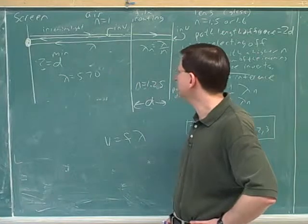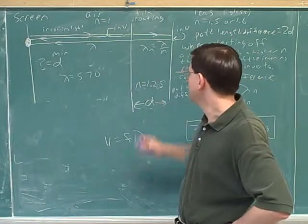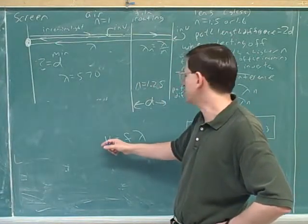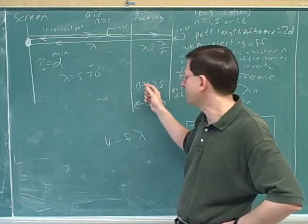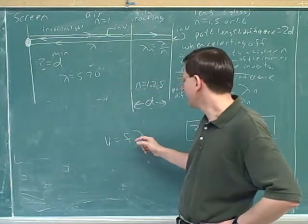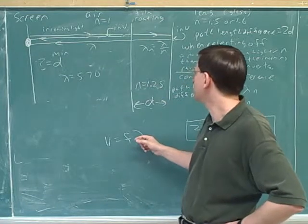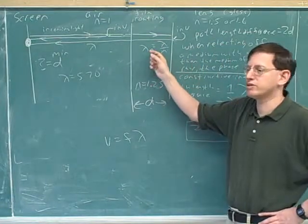The whole logic here is that when you move into this medium, you're going to be slowed down. Your speed is going to be slowed down by a factor of 1.25. And since f is constant, we've memorized that, lambda has to be decreased by a factor of 1.25. Well, here's that equation that we wrote down.